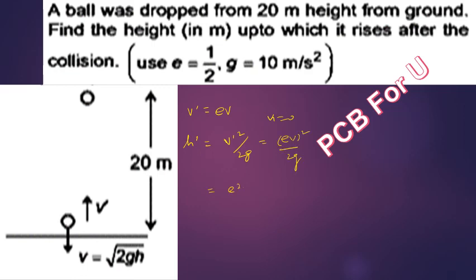The rebound height is given by e squared times v squared by 2g, which equals e squared times u squared by 2g. So the height after collision is e squared u squared by 2g.